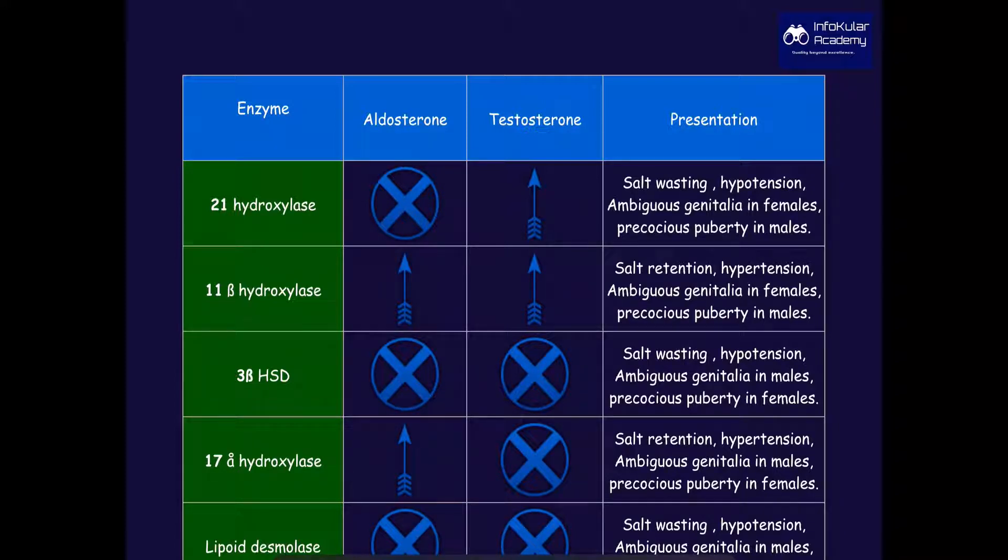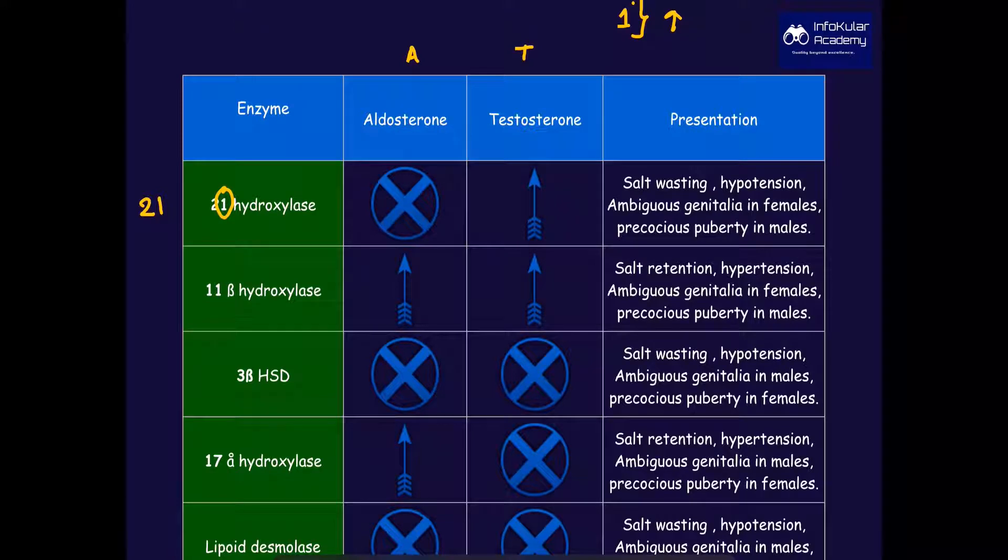The first and foremost trick is you need to write A first and then T, and the second trick is whenever there is a one, you have to read it as increased. So when you write 2 and 1, you have to read 2 for aldosterone and 1 which is increased testosterone. Increased testosterone in 21-hydroxylase deficiency.